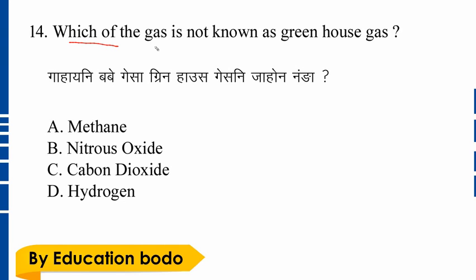Question number fourteen: Which of the following gases is not known as a greenhouse gas? Option D is the right answer.